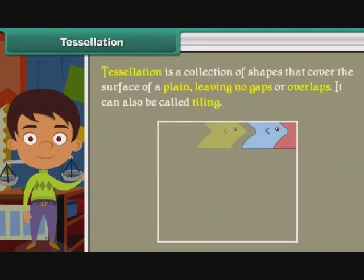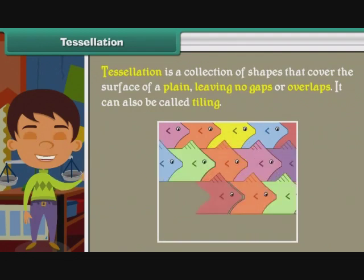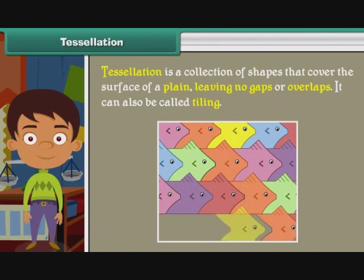Tessellation. Tessellation is a collection of shapes that cover the surface of a plane leaving no gaps or overlaps. It can also be called tiling.